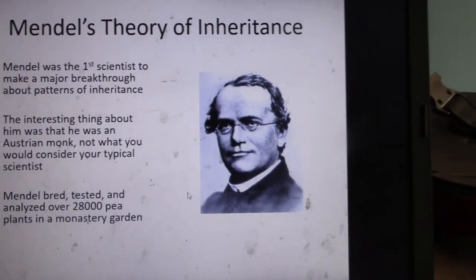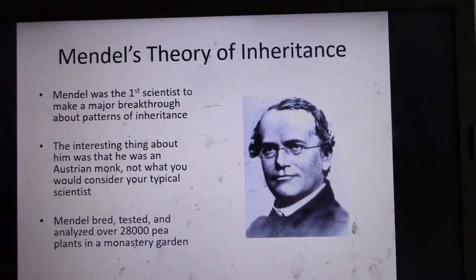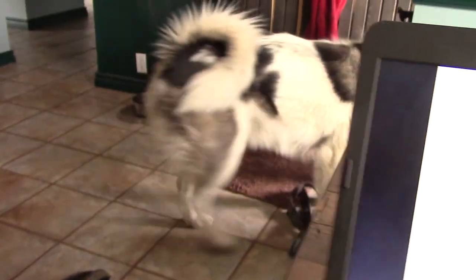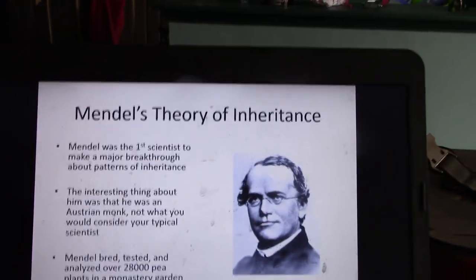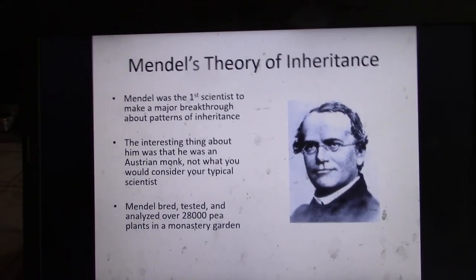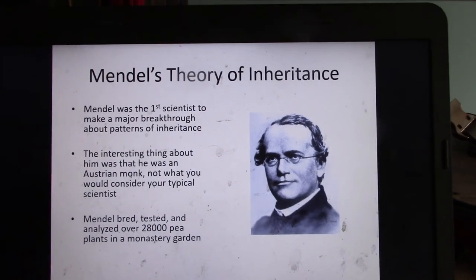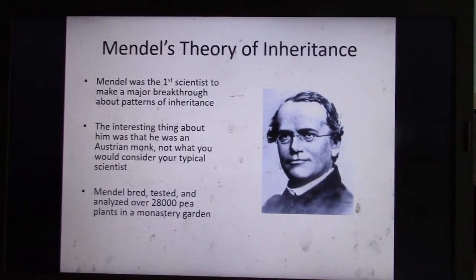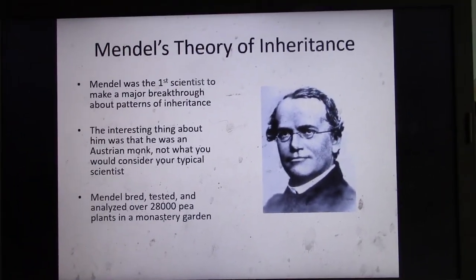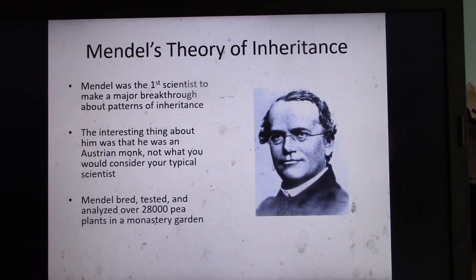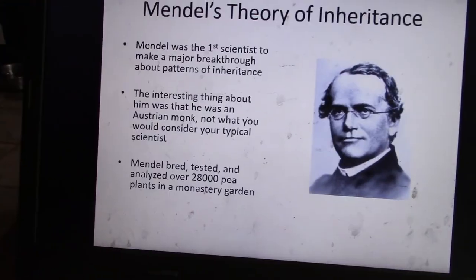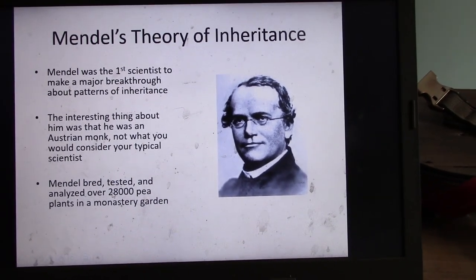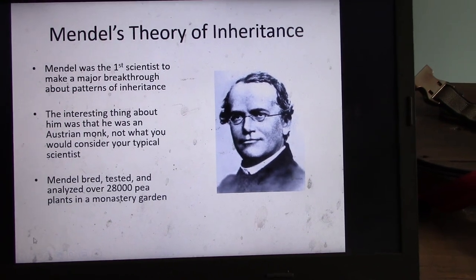We're going to talk about Gregor Mendel. Gregor Mendel came up with a modern genetic inheritance theory. Mendel was the first scientist to make a major breakthrough about the patterns of inheritance. He was a very eccentric dude — a religious man who also maintained his own pea garden. He had about 28,000 pea plants.